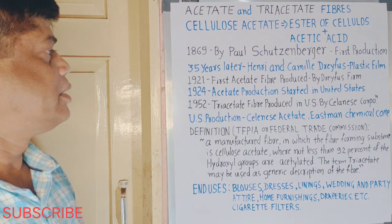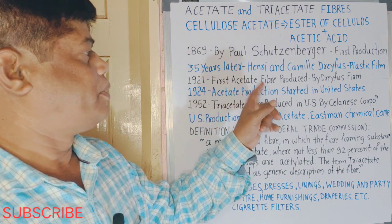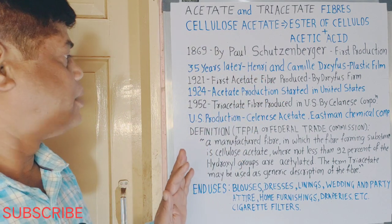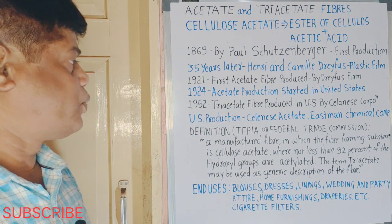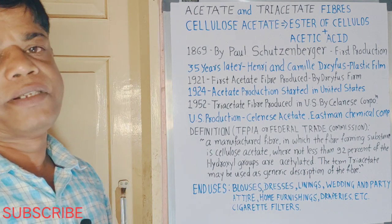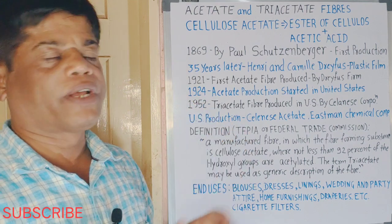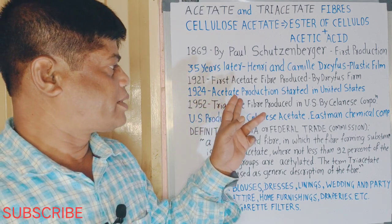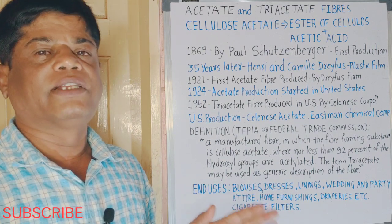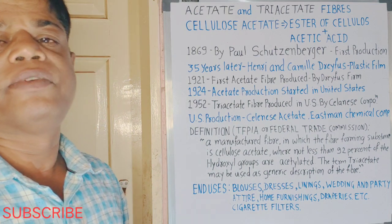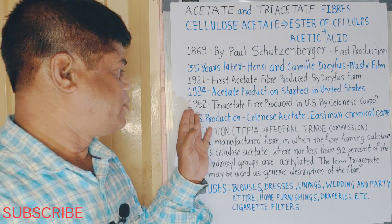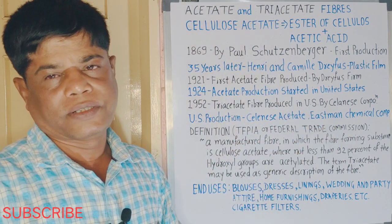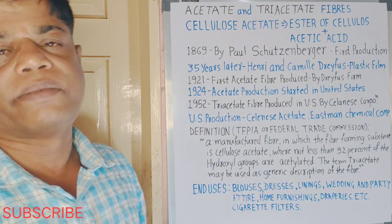In 1921, the first acetate film was produced by the Dreyfus brothers. Research continued, and acetate filament fiber production started in the United States in 1924. Later, in 1952, triacetate fiber production also started, by the Celanese Corporation in the US. Triacetate is a modification of acetate fibers.